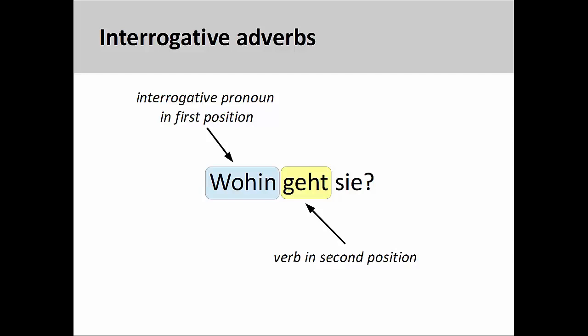For example, in the sentence here, wohin geht sie, where is she going to? The interrogative adverb wohin inquires about the direction of an activity performed by the subject of the sentence.